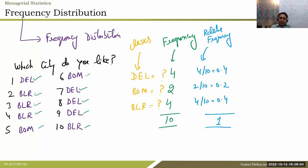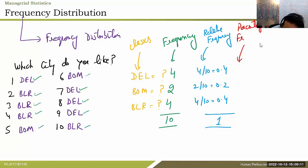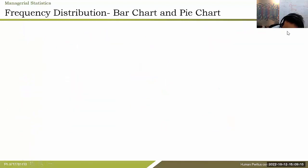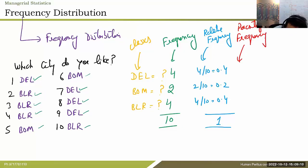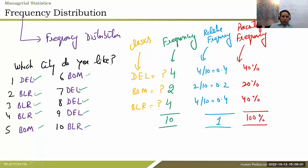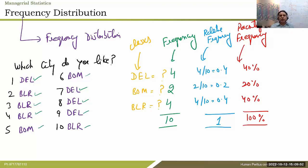Another way of presenting this is percentage frequency: 40%, 20%, and 40% respectively, and the total of percentage frequency should add up to 100. So frequency is nothing but how many times each category or each class in the data appears, and we also understand what is relative frequency and percentage frequency.